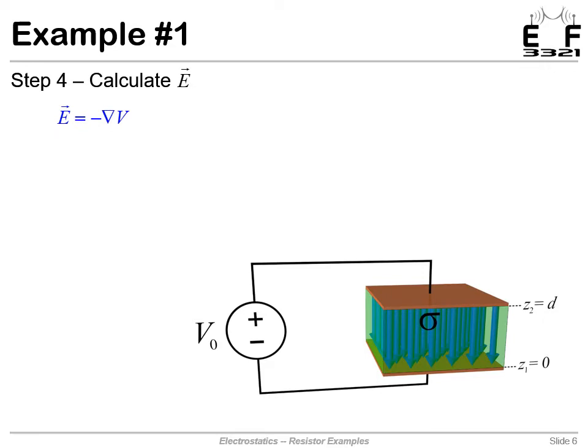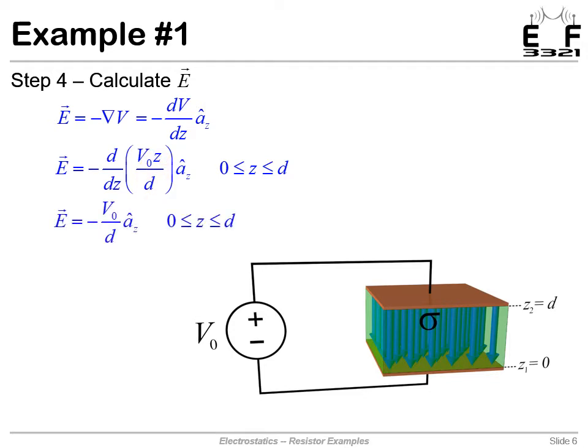Given the potential, now we can calculate the electric field intensity, which is just the negative gradient of the voltage. We do this in one dimension. We plug in our expression for the voltage between the plates, and then we perform the derivative. So now we know the electric field between the plates. The negative sign indicates that the electric field is pointing from top plate to the bottom plate, in the negative Z direction.